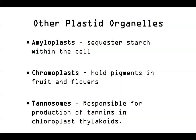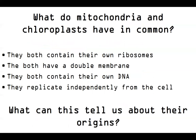So what do mitochondria and chloroplasts have in common? They both contain their own ribosomes distinct from the rest of the cell. They both have a double membrane. And they both contain their own circular DNA.